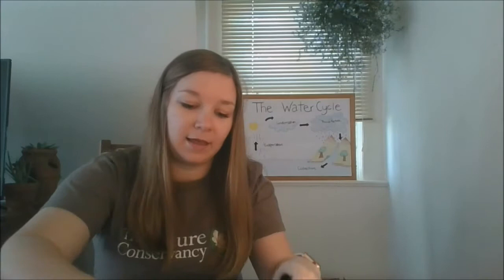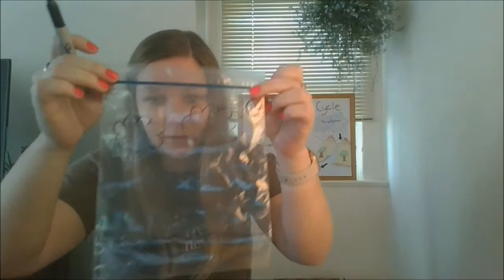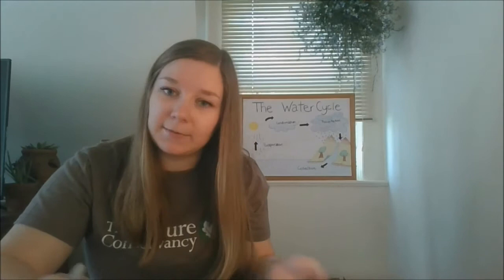So we are going to make our own water cycle in a bag. You're going to take your bag and draw a picture kind of similar to what I have behind me. Down at the bottom, you're going to make some squiggles, and that is going to be your water. And then we are going to draw some clouds up at the top and have a nice sun. And then we're going to label it. So we have this nice picture of some clouds and some water and some sun.